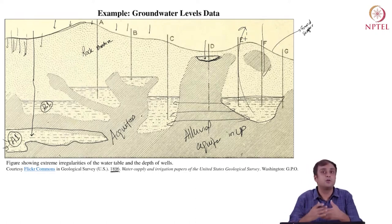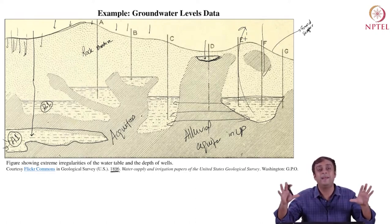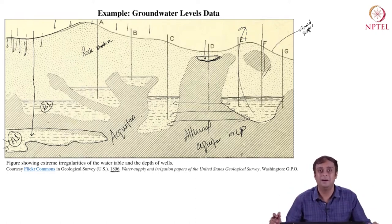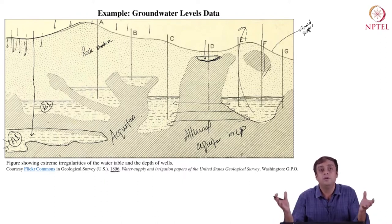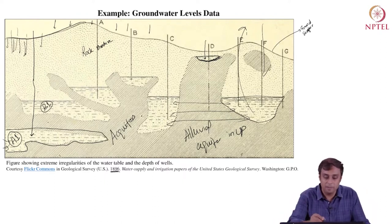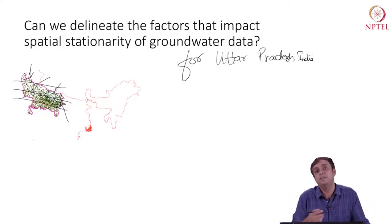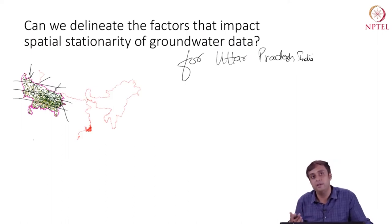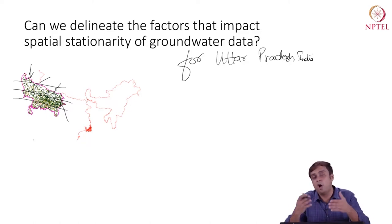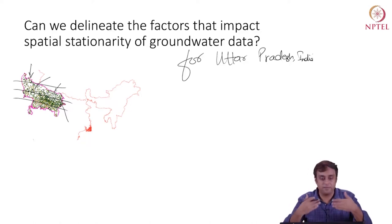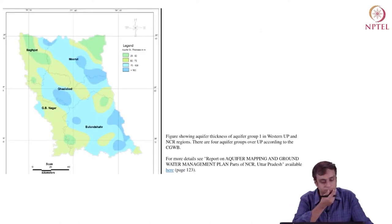That is not to say that we can now blindly assume that UP by itself is a spatially stationary domain as far as groundwater data are concerned. What we will see is probably not, because there are other factors to worry about.